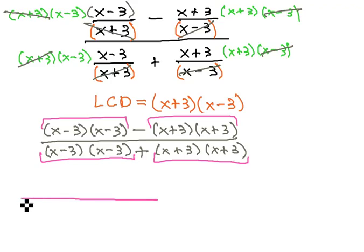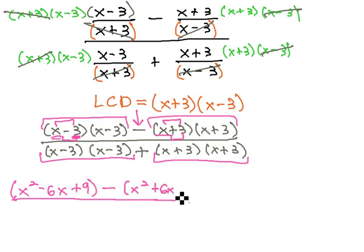So we can use our squaring shortcut to help us multiply that out, but I'm going to keep each pair in parentheses because there's an extra step we need to deal with when it comes to that minus sign. So we square the first term to get x², then we have the product twice: -3x and -3x is -6x, and square the last term to get positive 9, minus the second perfect square (x+3)², which is x² plus twice the product (3x plus 3x is 6x) plus 9, over (x-3)² which is x²-6x+9, plus (x+3)² which is x²+6x+9.